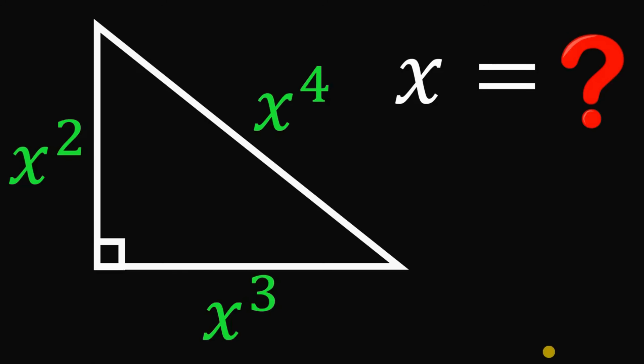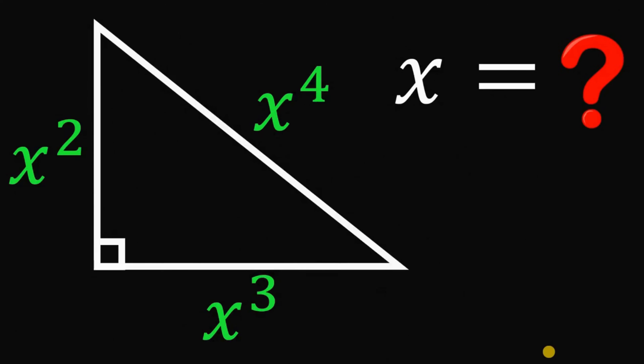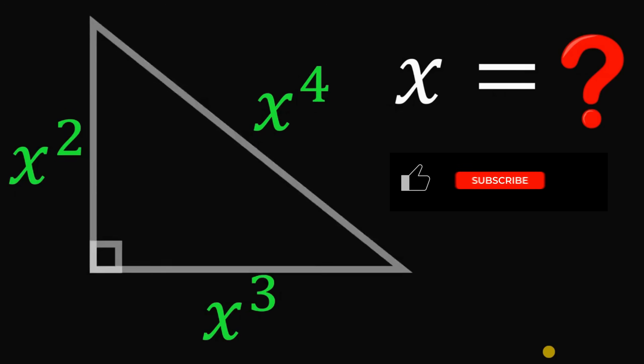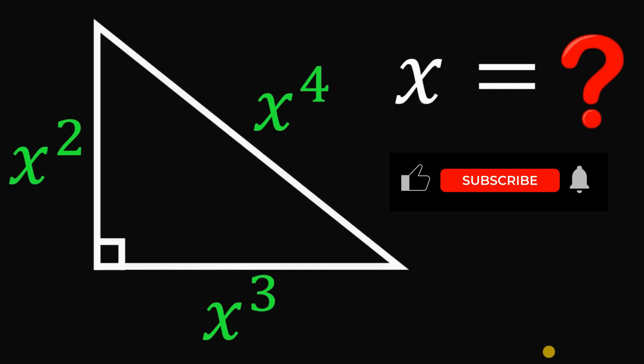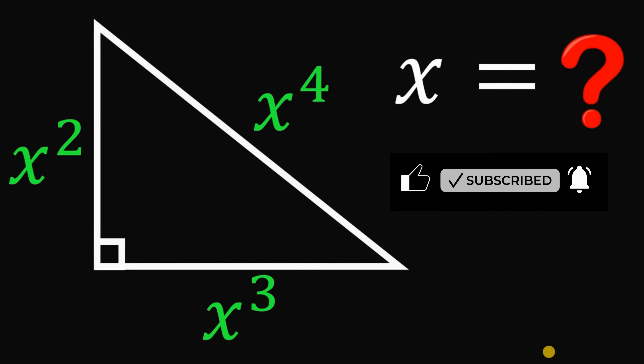Can you solve this geometry challenge? Given this right triangle with sides x squared, x cubed, and x raised to the fourth power, our goal is to solve for the value of x.